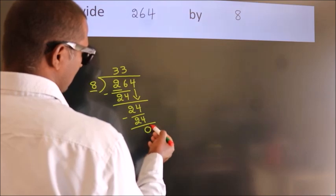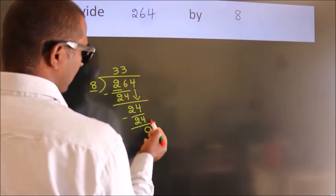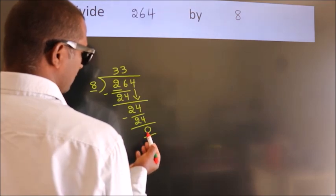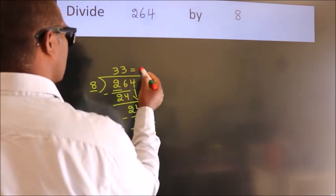After this, no more numbers to bring it down. And we got remainder 0. So this is our quotient.